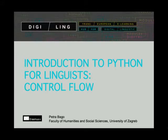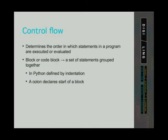Until now our code was a set of linear instructions, but now we will learn to control flow. Control flow is the order in which statements are evaluated or executed. When some code is grouped together we call this a block or a code block. In Python, code blocks are defined by indentation. At the end of the first line there is a colon that declares the start of a block, and the indentation starts from the second line of the block.